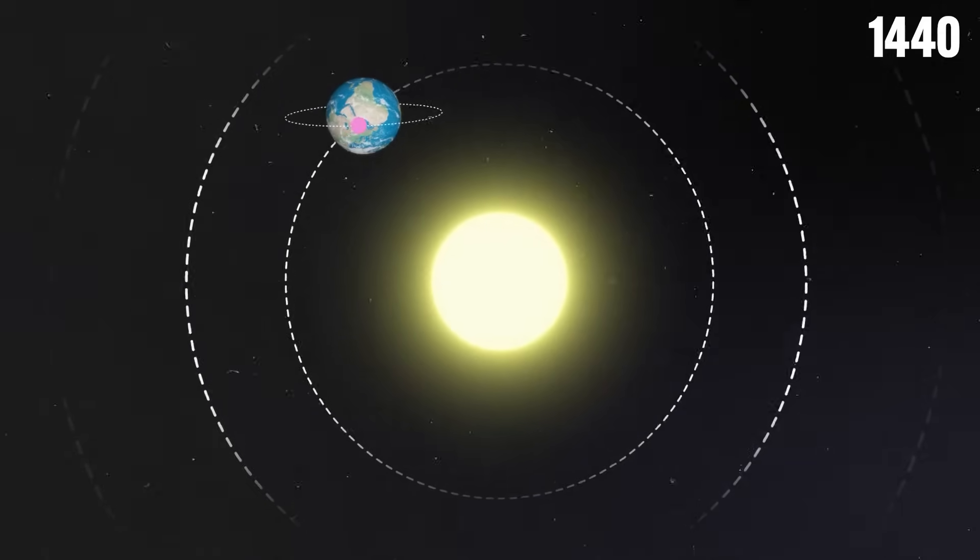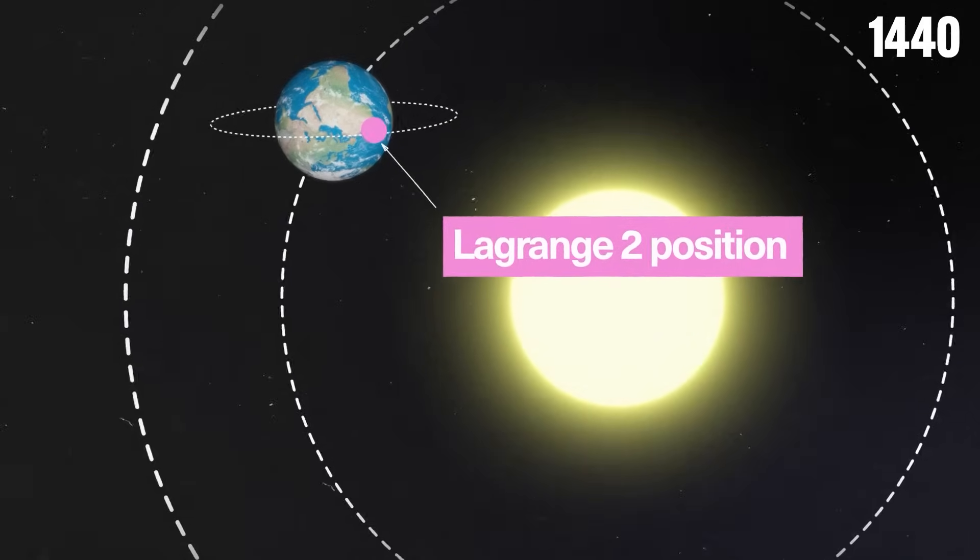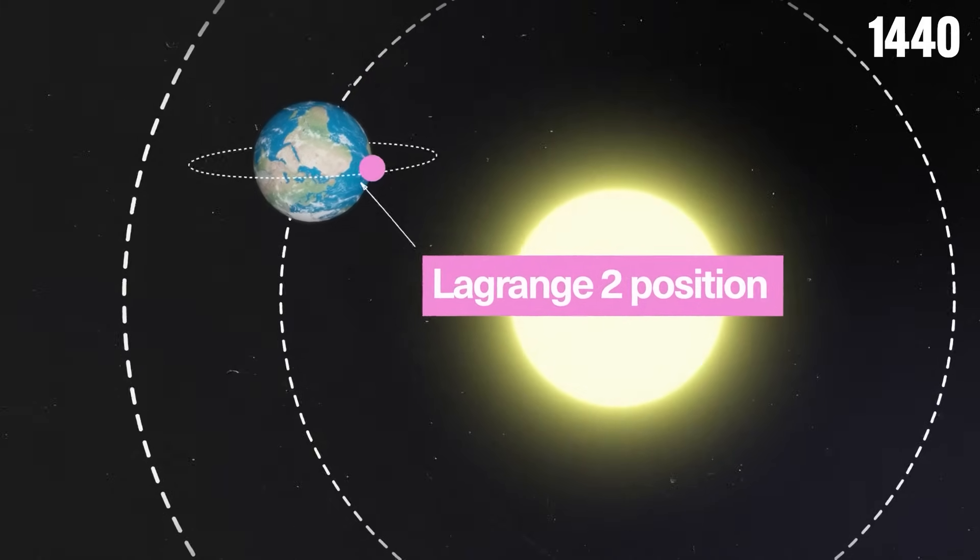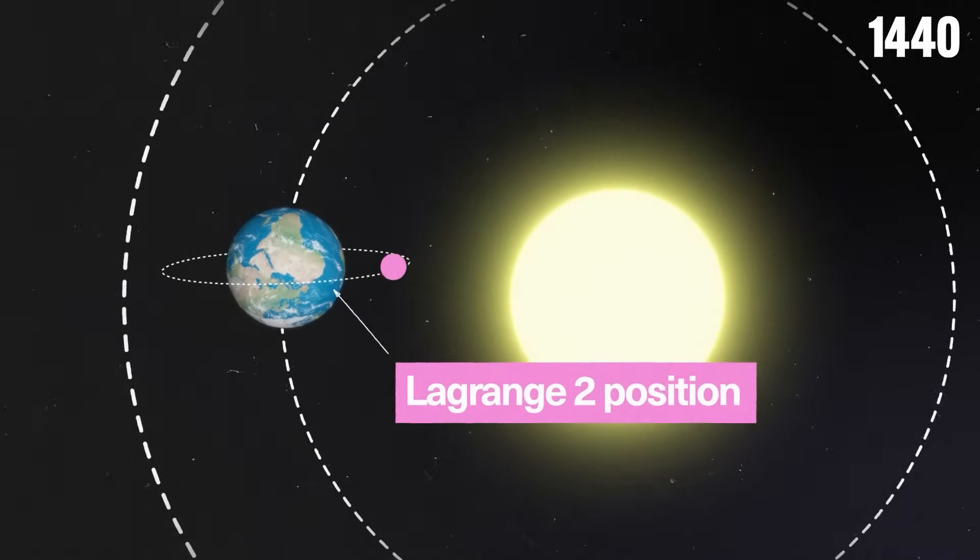The Webb is in solar orbit roughly one million miles from Earth. This point is called a Lagrange 2 position, a stable location where the relative gravitational poles of the Earth and the Sun cancel each other out.